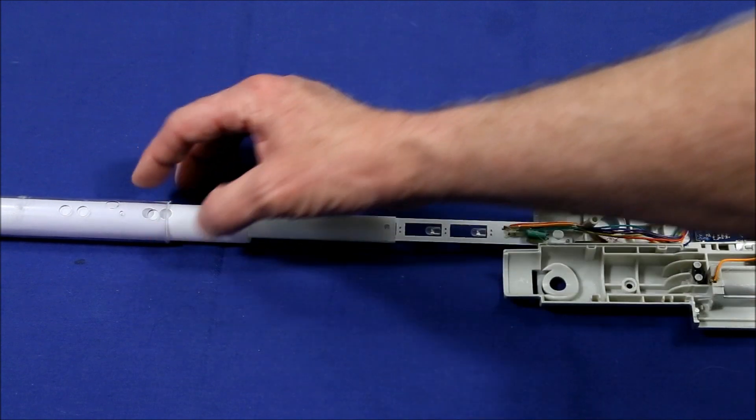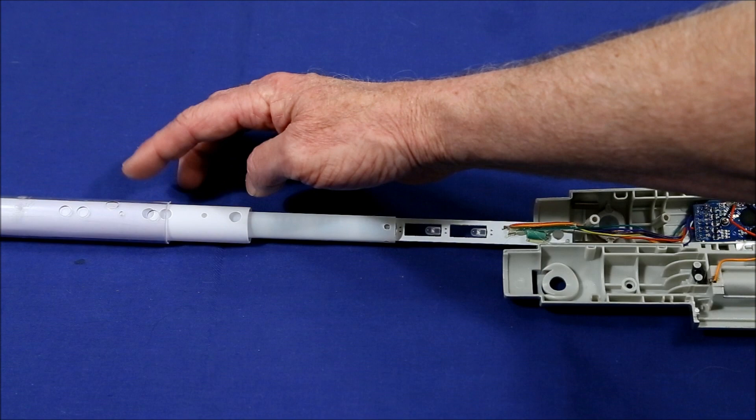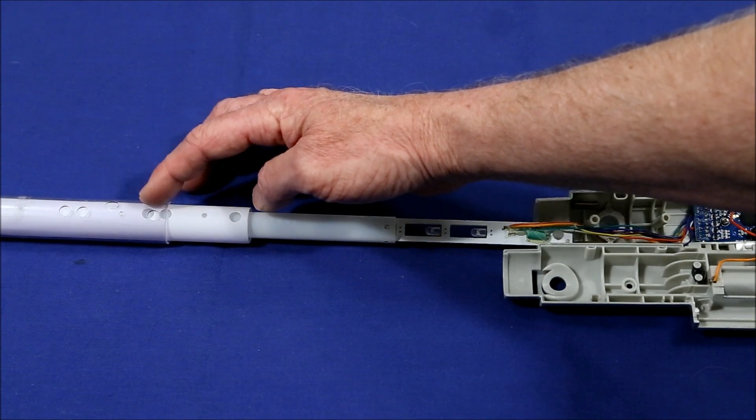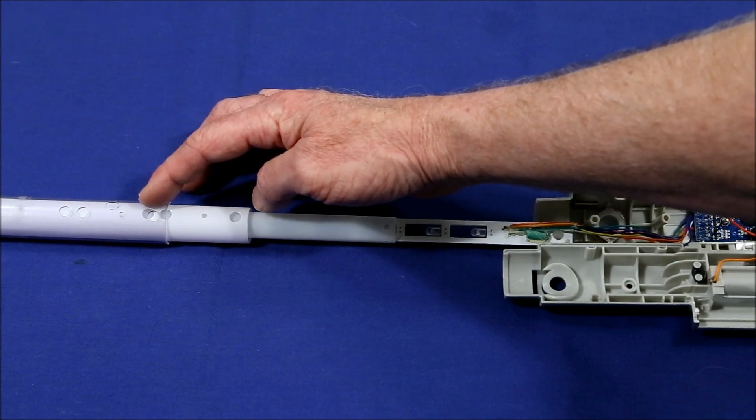Finally on the outside you have the transparent outer shell which is what takes the beating when you're clobbering each other.